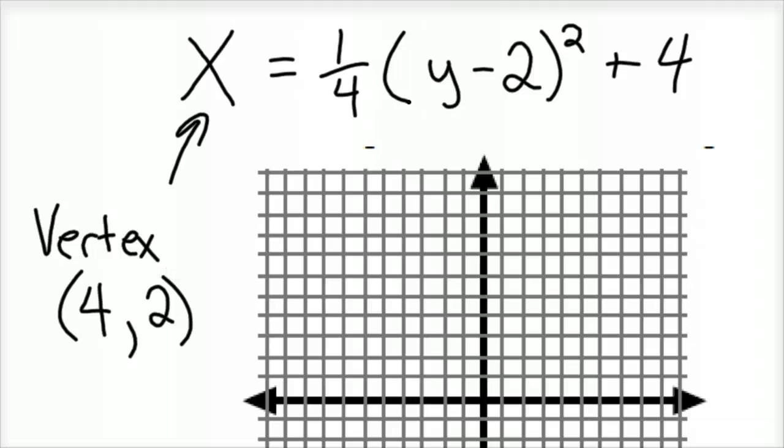I know this one is opening right because that 1/4 is positive. That's also my axis of symmetry. But this time, my axis of symmetry passes through from left to right. It's y equals 2 for my axis of symmetry.